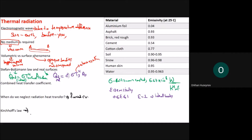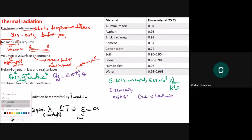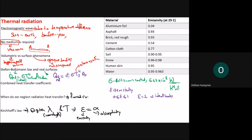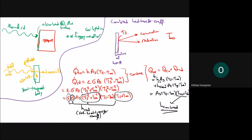Kirchhoff's law states that at a given wavelength lambda and temperature, the emissivity epsilon of the body equals the absorptivity alpha. Emissivity is the energy that the body releases, while absorptivity is the energy that the body absorbs.